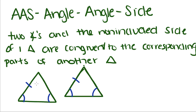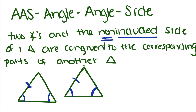Angle-angle-side is the fourth one we're going to learn. We know that two angles and the non-included side of one triangle are congruent to the corresponding parts of another triangle. This is congruent to this, this is congruent to this, and this side does not fall between these two angles — because that would be angle-side-angle.